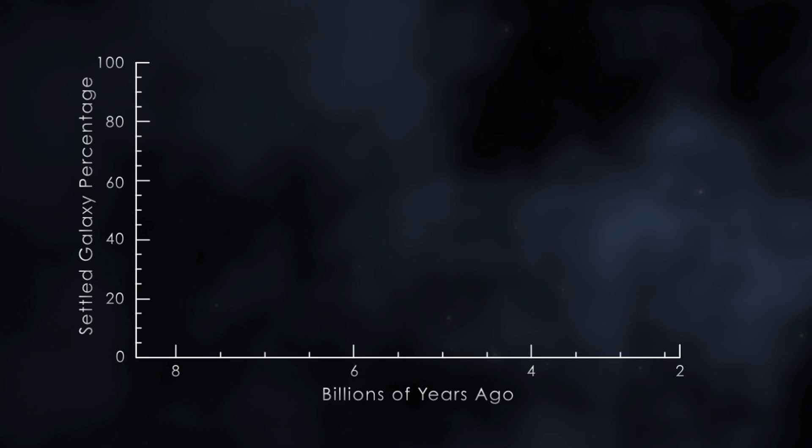We find the mass of a galaxy plays a large role in how organized it is. The most massive galaxies are the most well-organized at all times, and the least massive galaxies are the least well-organized at all times. On average, the percentage of galaxies which are settled increases with time.